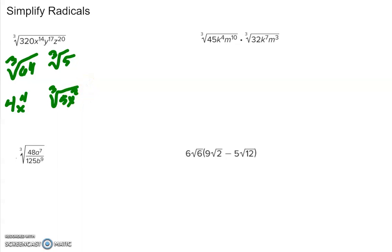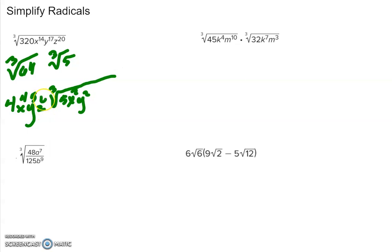For the cube root of y to the 17th: how many groups of 3 can I get out of 17? That would be 5, giving me y to the 5th on the outside. 3 times 5 is 15, and 17 minus 15 is 2, so I have y squared left on the inside. For z to the 20th: how many groups of 3 can I get out of 20? That would be 6, giving z to the 6th. 6 times 3 is 18, and 20 minus 18 is 2, so I have z squared on the inside. That's the simplified form of that radical.